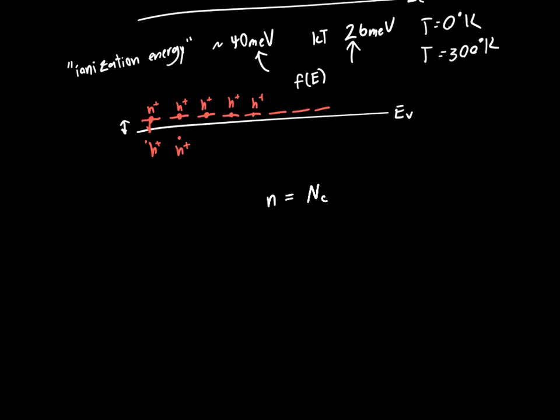Remember, last time we derived the equation that the number of electrons is just equal to this constant out front, which is a function of temperature, times e to the minus Ec minus Ef over kT. So the Fermi energy gives us an indicator, and since Nc doesn't depend on anything to do with doping, it's Ef that has to change in this equation.